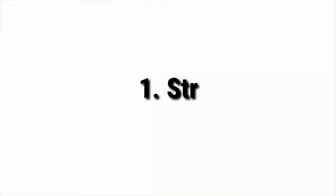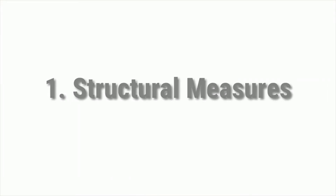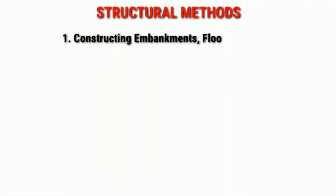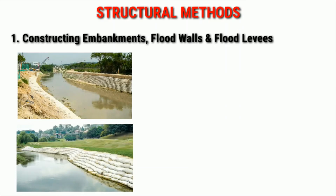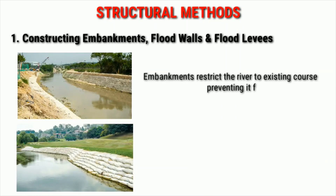We have covered the causes of the annual floods of Assam. Now we shall see the measures to control these floods. The first structural measure for flood management is constructing embankments, flood walls, or flood levees. The embankment system restricts the river to its existing course and prevents it from overflowing its banks. Embankments are the most popular methods of flood protection and have been constructed extensively.